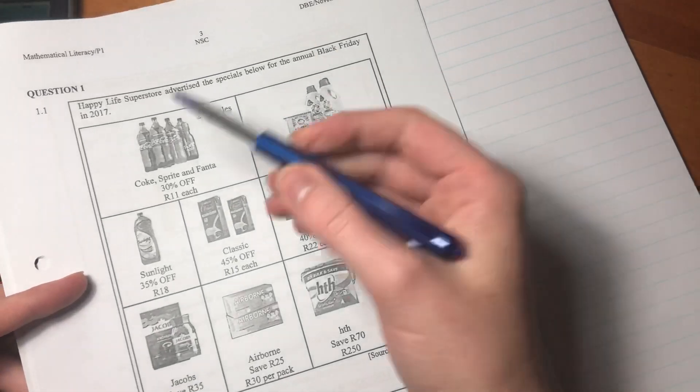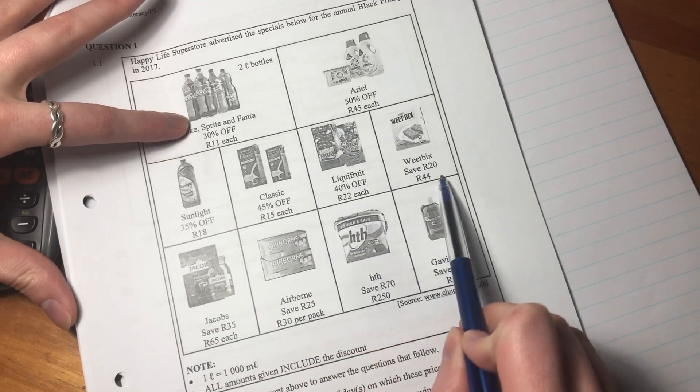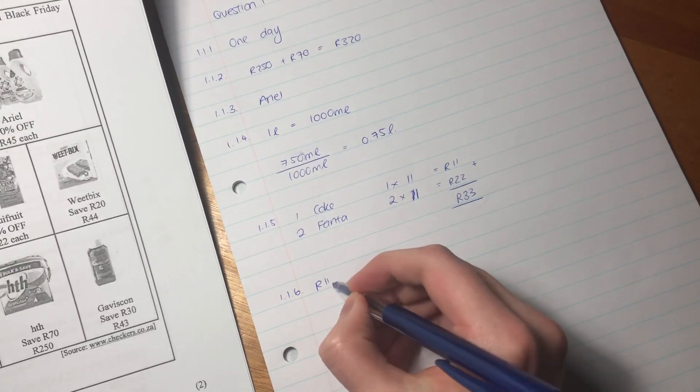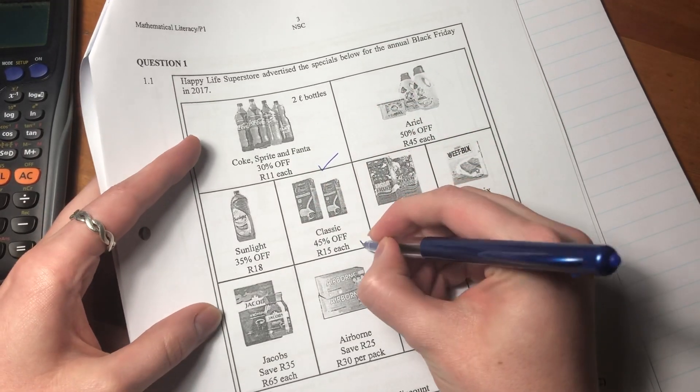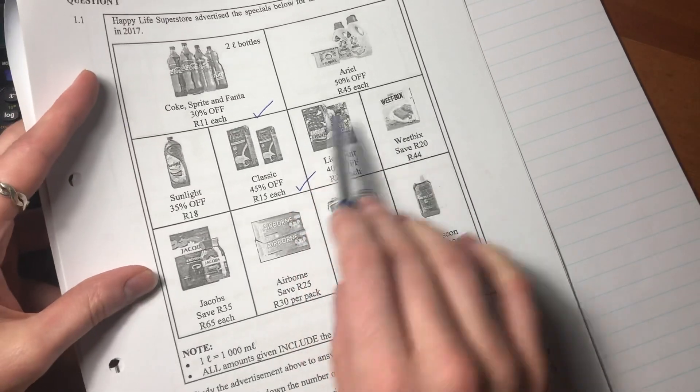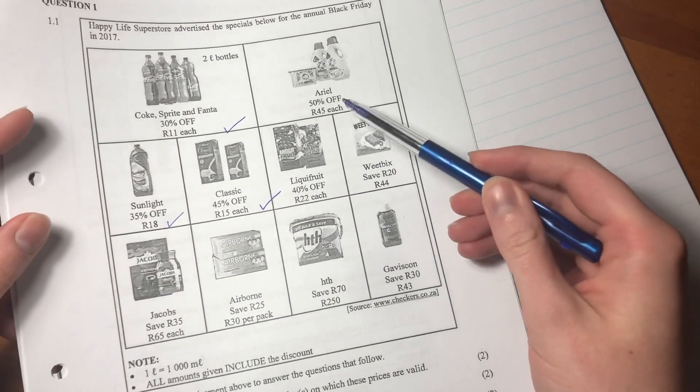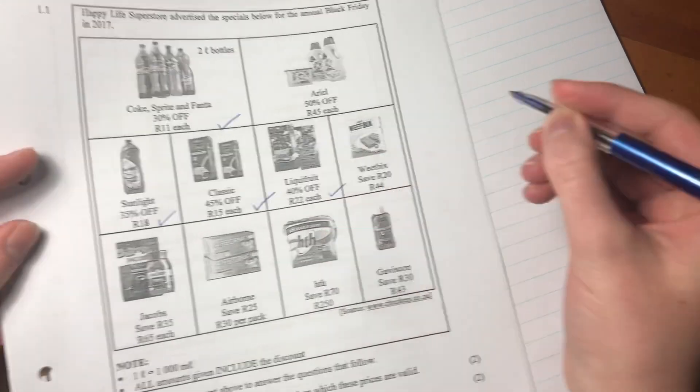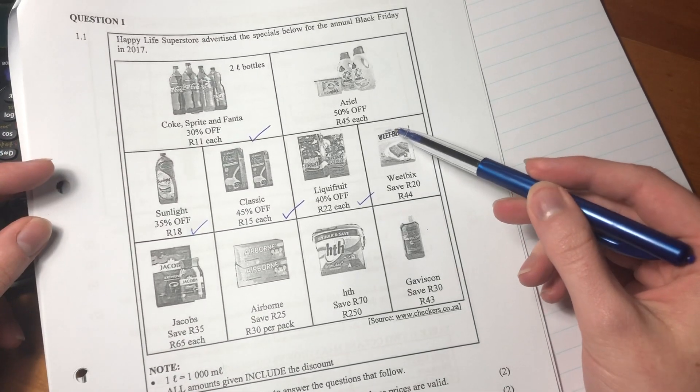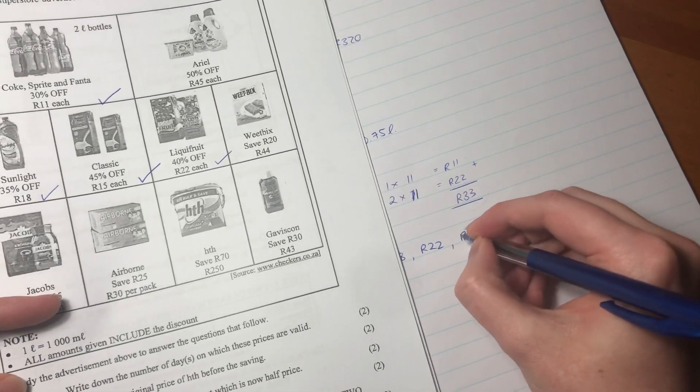There's nothing smaller than 11. So I'm going to go 11, and let's tick them off as we go. Then I'm going to go 15, then I'm going to go 18, then I'm going to go 22.